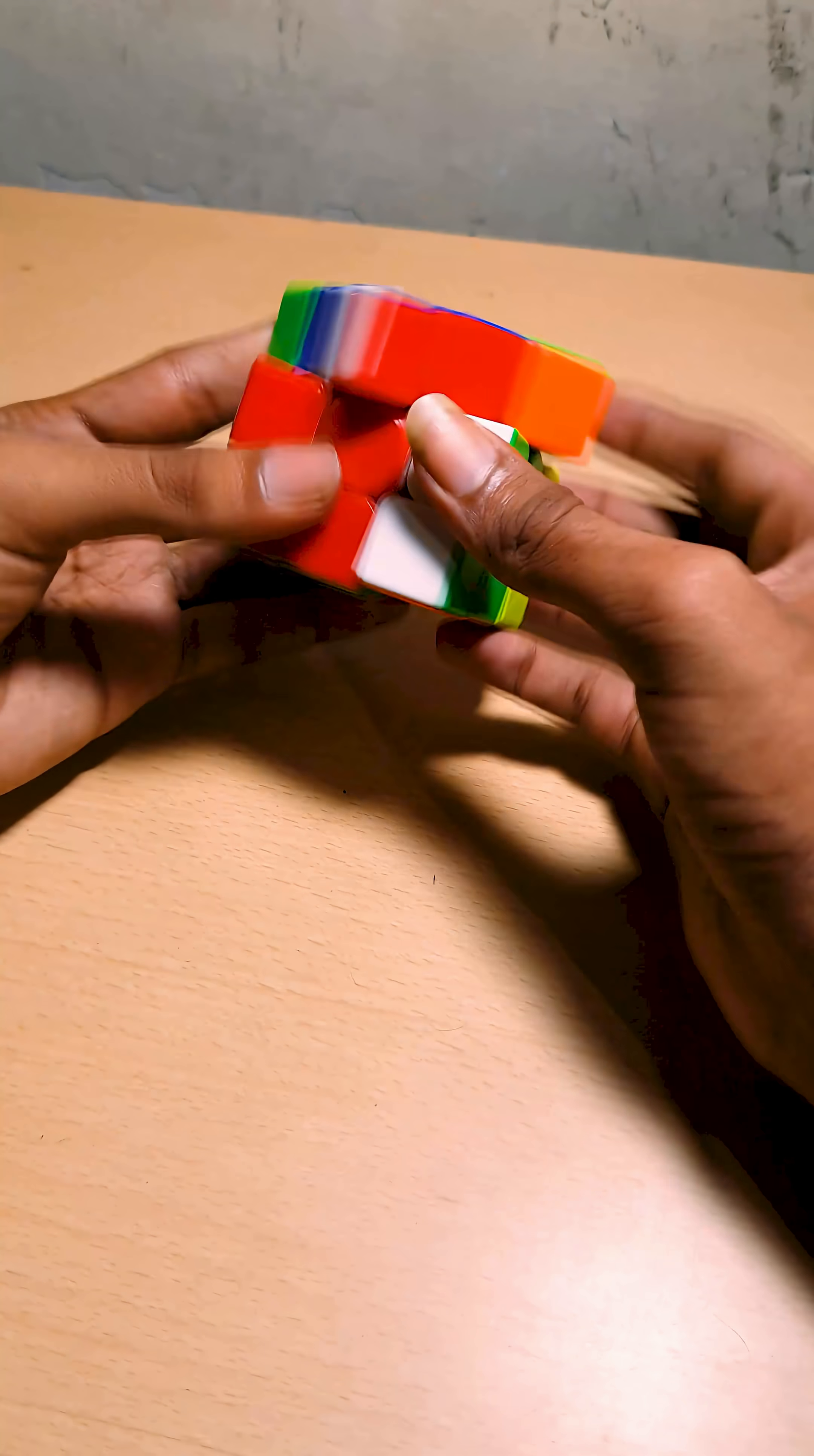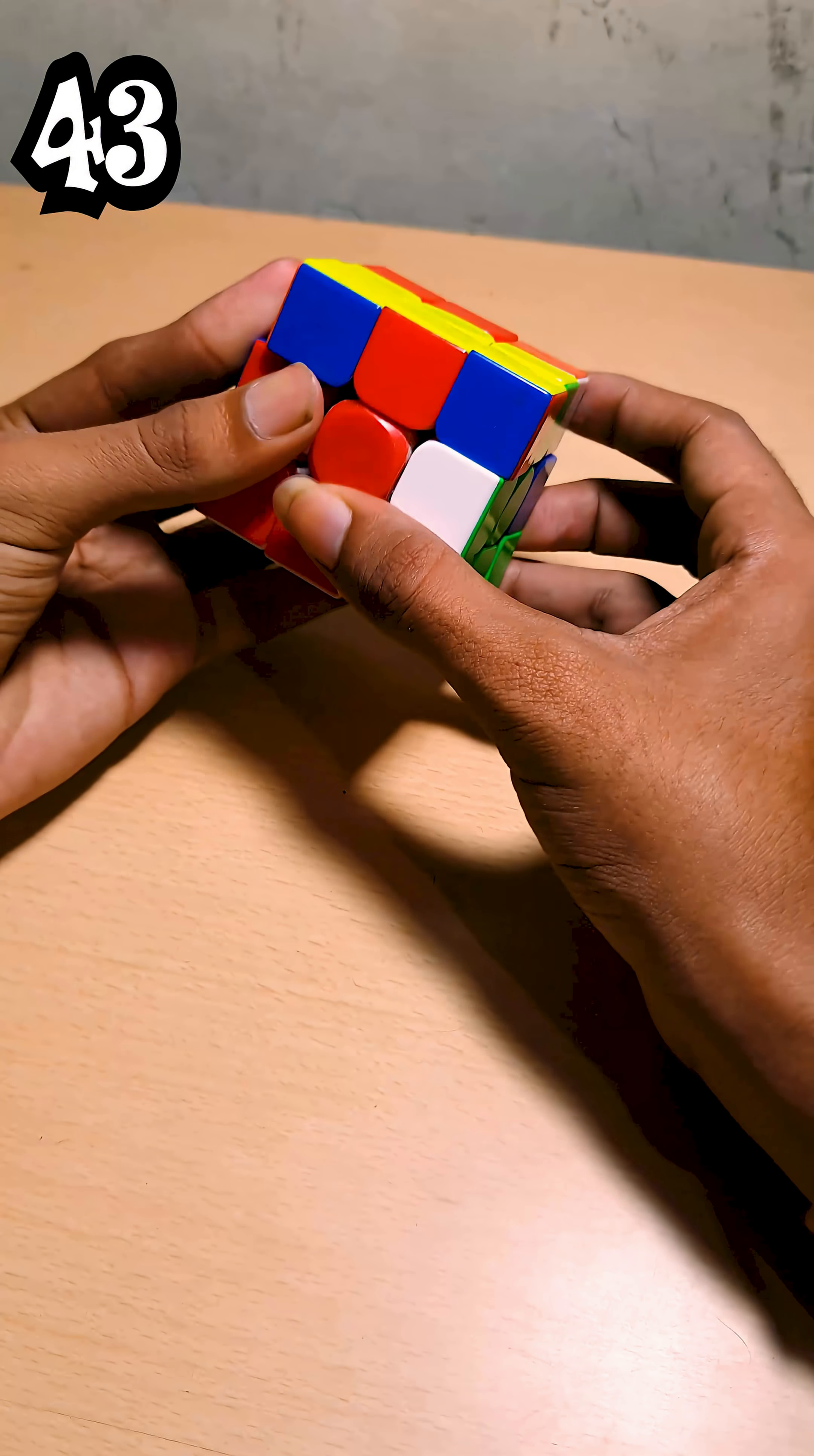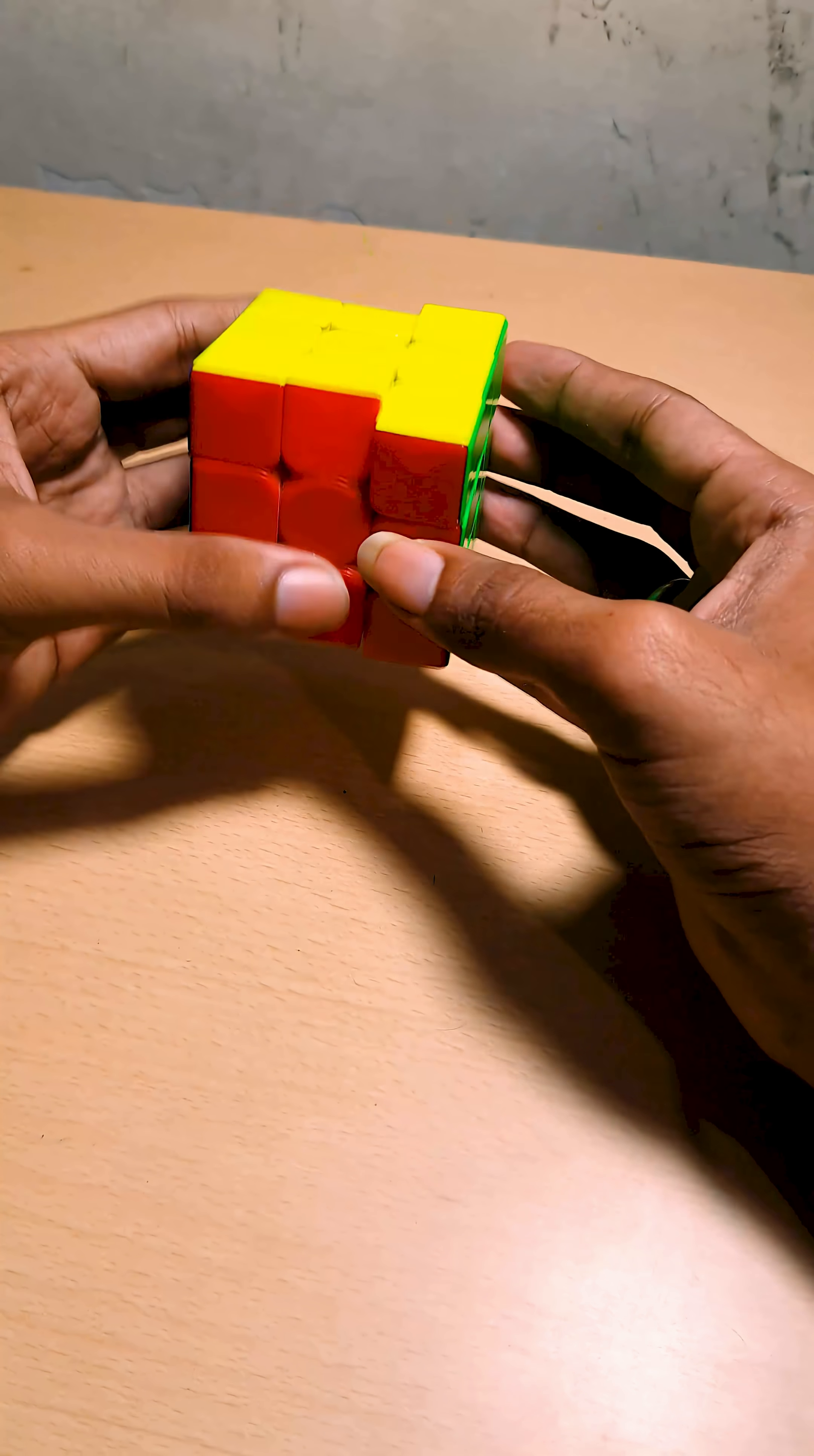In a Rubik's cube, there's 43 quintillion positions. That's 43 followed by 18 zeros. That's a lot.